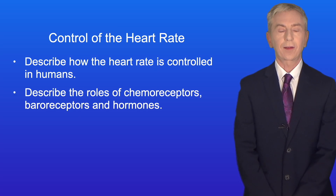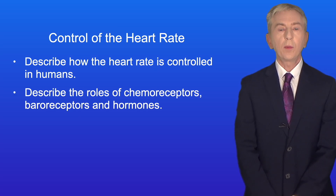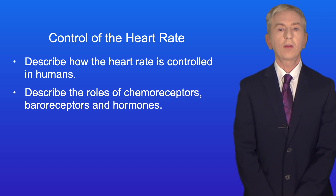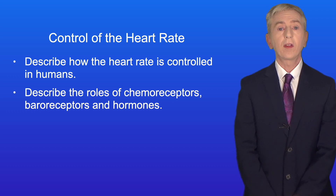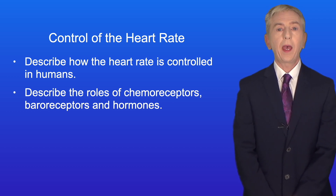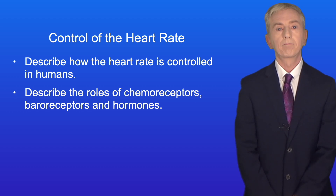Hi and welcome back to Free Science Lessons. By the end of this video you should be able to describe how the heart rate is controlled in humans. This includes the roles of chemoreceptors, baroreceptors and hormones.